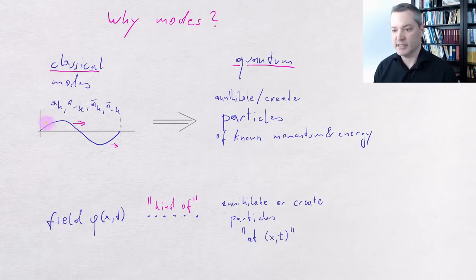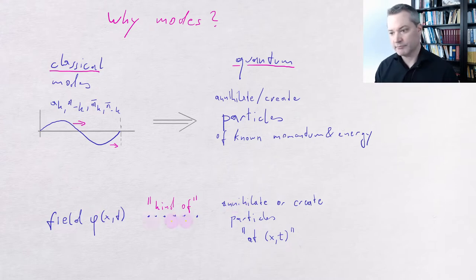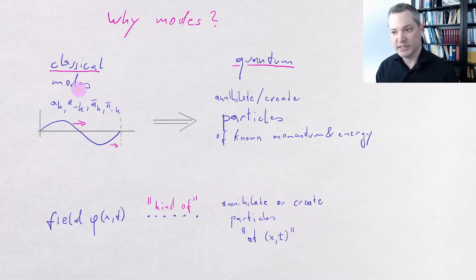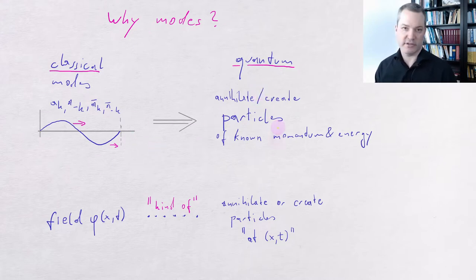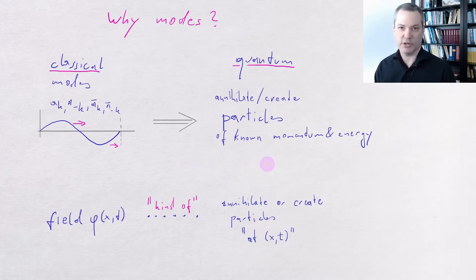In contrast to that, the field turns out to be kind of the object that annihilates or creates particles at a particular spacetime point. But this relation has a lot more square quotes around it because it's mathematically much more difficult to make precise. Therefore, becoming really familiar with the field modes will make it much easier for us to understand the quantum theory of the field. And actually, most of the calculations that we do with the classical mode will carry over one-to-one to the quantum theory.